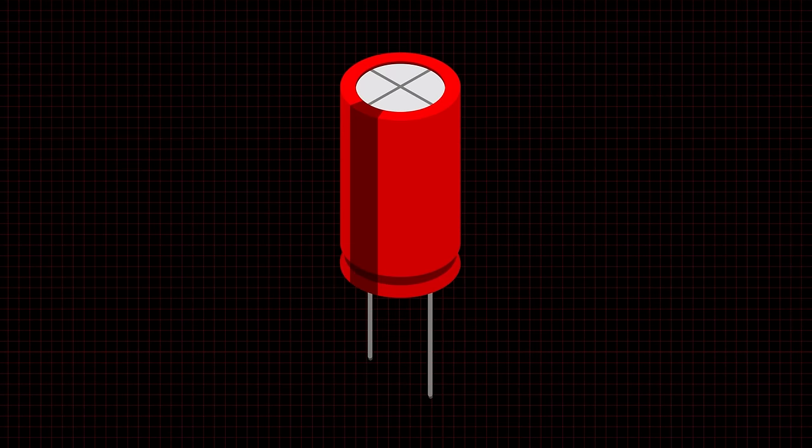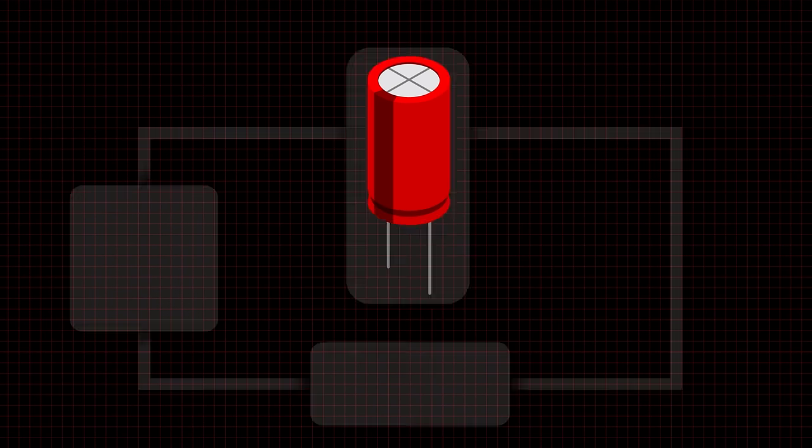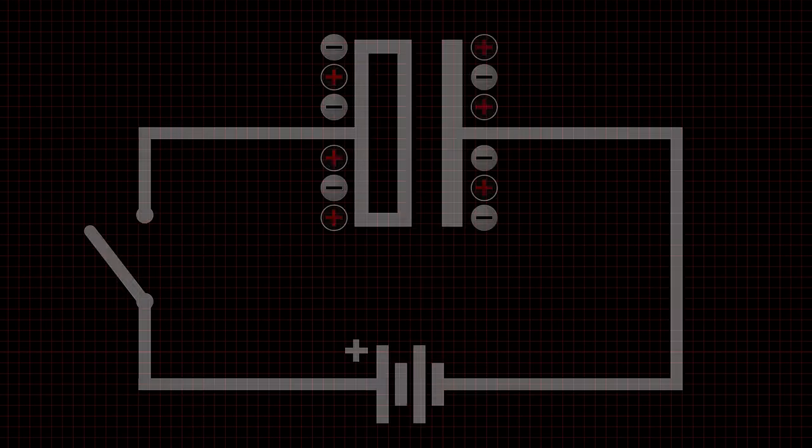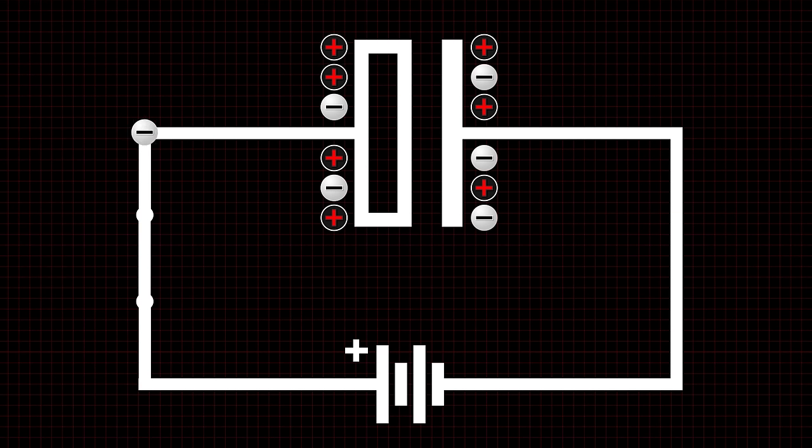To explain how they function, let's look at a basic polarized aluminum electrolytic capacitor. As power is applied to the capacitor, the plate attached to the negative lead will obtain a buildup of electrons, while the plate attached to the positive lead will release electrons.